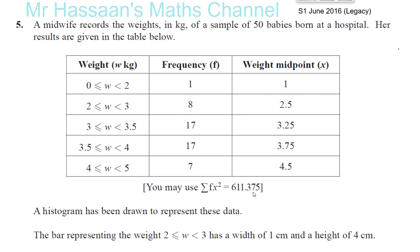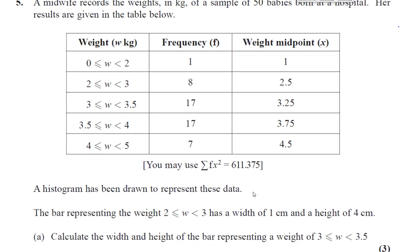A histogram has been drawn to represent these data. The bar representing the weight from 2 to 3 has a width of 1 centimeter and a height of 4 centimeters.